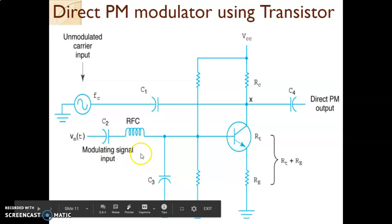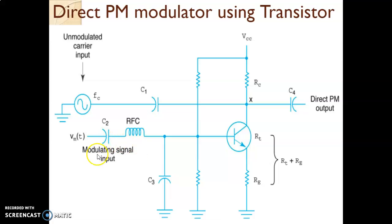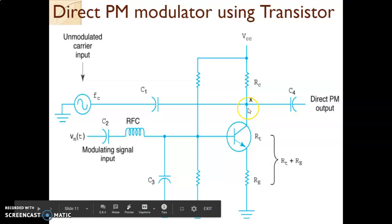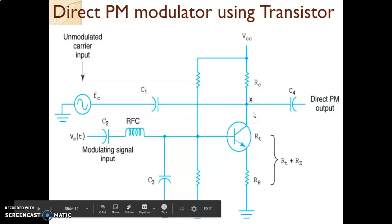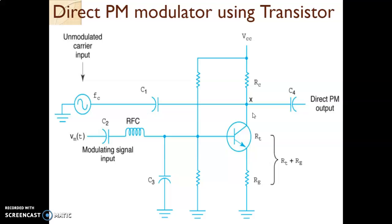The modulating signal is applied to the base of the transistor. Let us consider that the modulating signal is not applied and only the carrier signal is applied. When the transistor is operating, there is capacitor C1, and this particular path will be shorted. The resistance from point X to ground will be RT plus RE. This RT plus RE and C1 are designed such that the phase shift obtained from this network is 45 degrees.